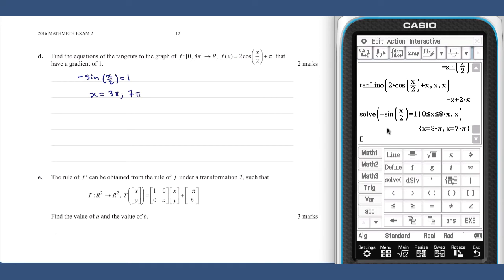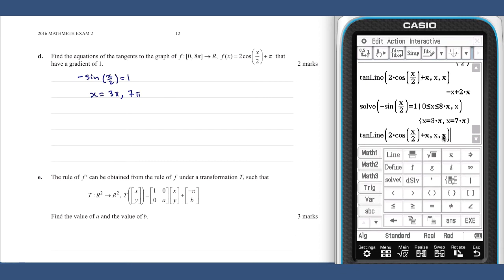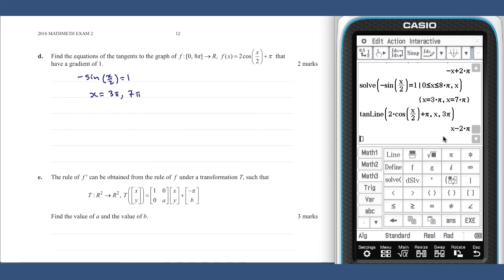For our equation of a tangent if we take our command line of tan line that we used previously and just edit the pi to be 3 pi, we have y equals x minus 2 pi. And if we change the 3 pi to be 7 pi we get y equals x minus 6 pi, which are our two tangents.